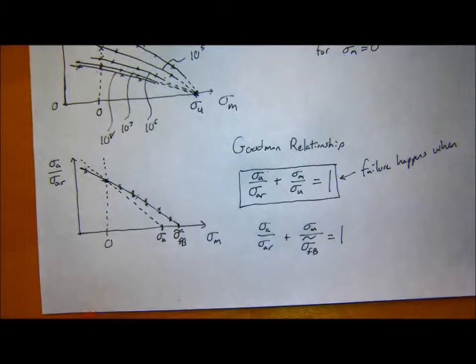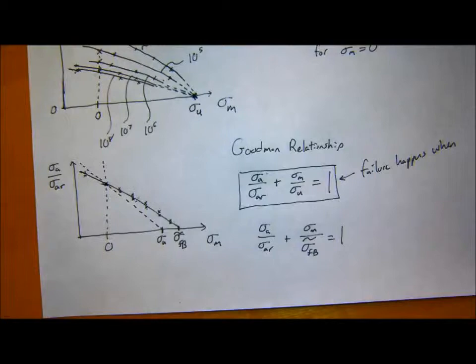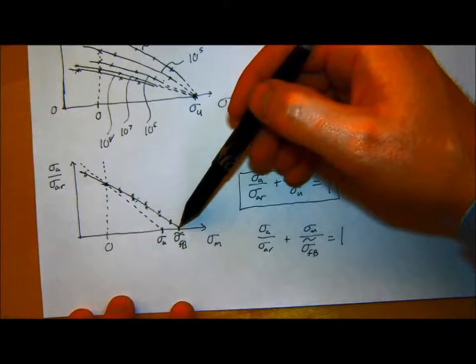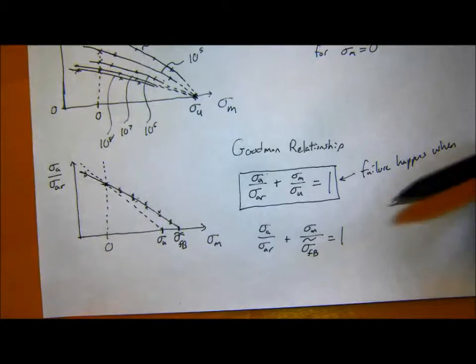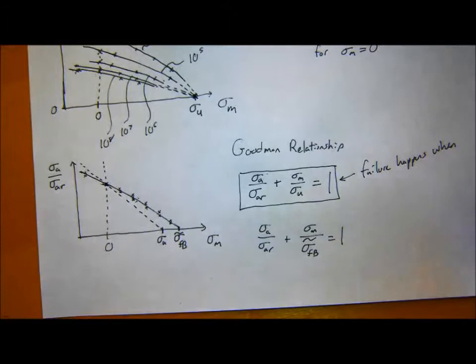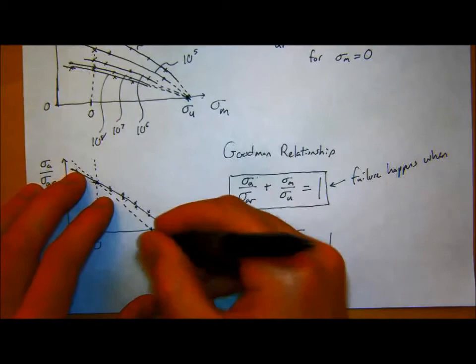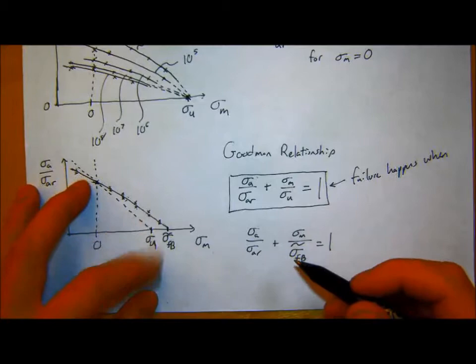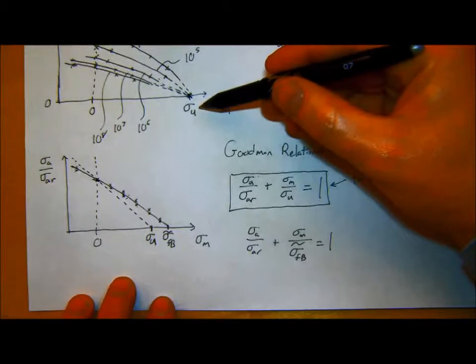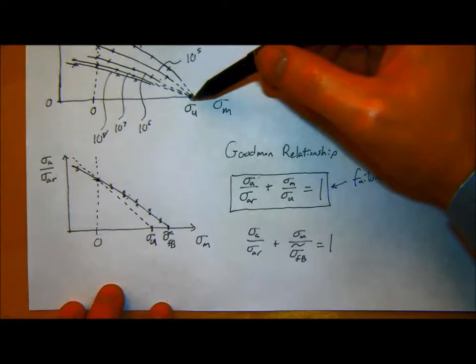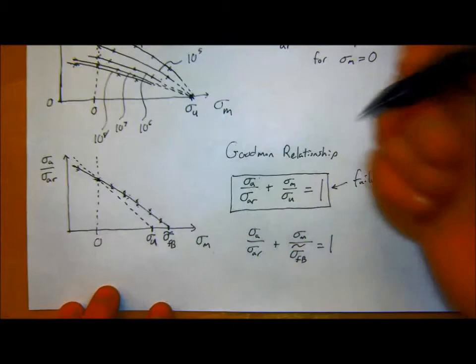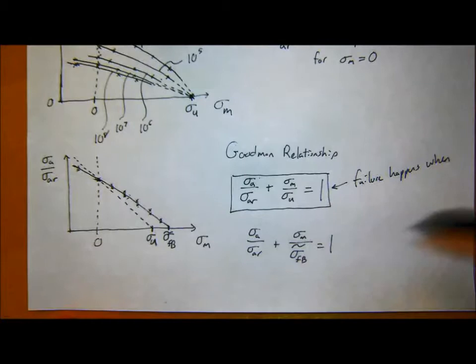The x-axis intercept — sometimes called sigma_f-b or a related failure stress — is where a straight-line fit to the data would intersect the mean-stress axis. I can't remember the exact name for it. All the curves theoretically converge to the ultimate stress point, though a straight-line fit doesn't always pass exactly through sigma_u.